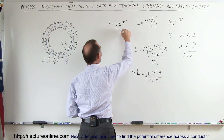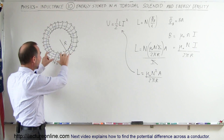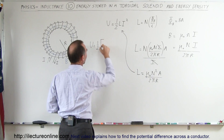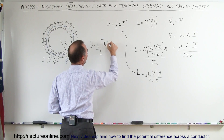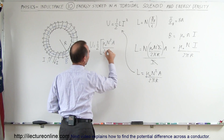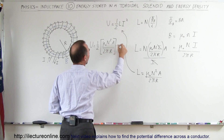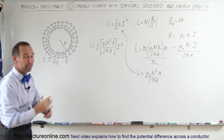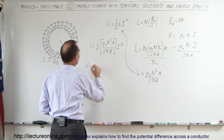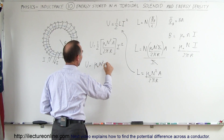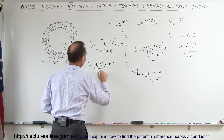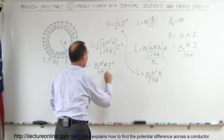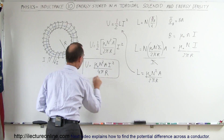We then plug that into our energy equation, which allows us to find the total energy inside the toroidal solenoid. The total energy equals one-half times L — which is mu-naught times N² times A divided by 2πr — times I². Simplifying, the total energy equals mu-naught times N² times A times I² divided by 4πr. That is the total energy inside the solenoid.